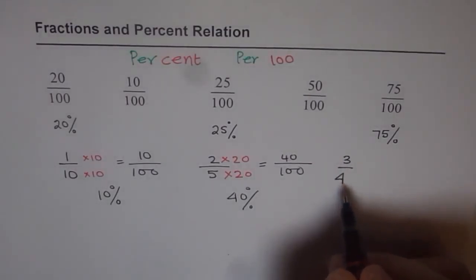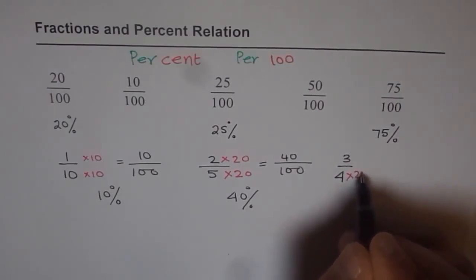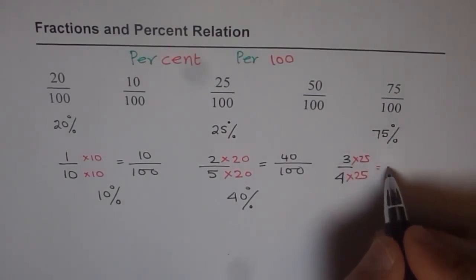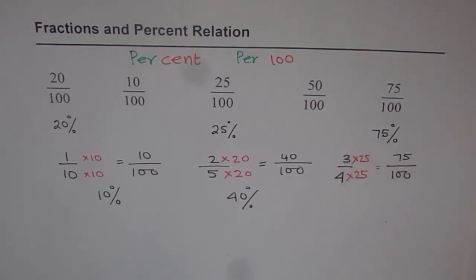You need to multiply 4 with some number so that you get 100. Well, 4 times 25, right? So 4 times 25 will work. 4 into 25. 3 into 25 means 3 quarters. So 4 quarters is 100 and 3 quarters is 75. You get 75 over 100 or 75 percent.